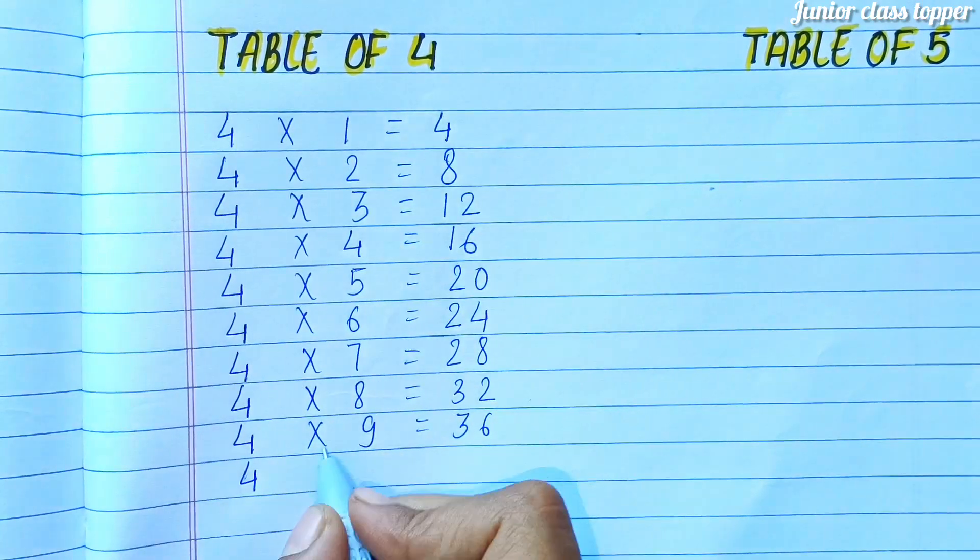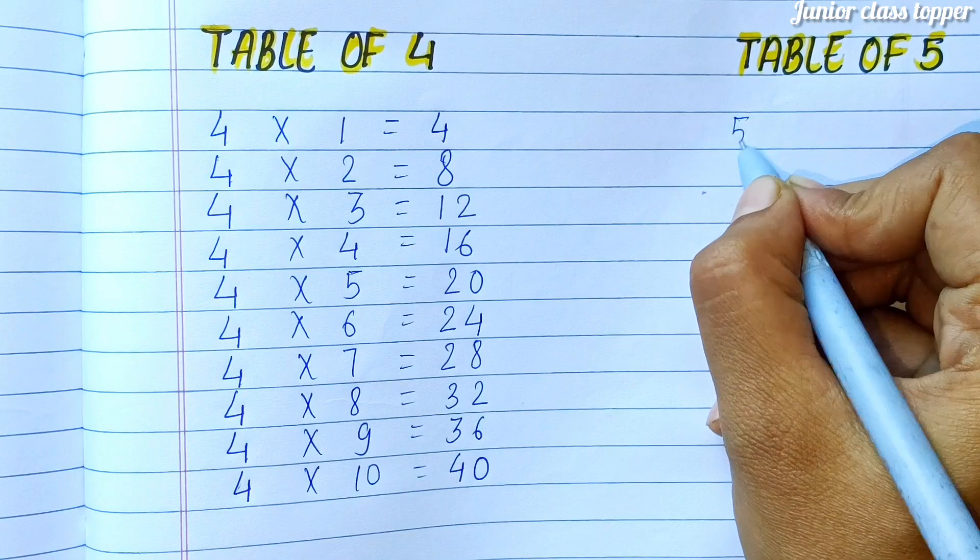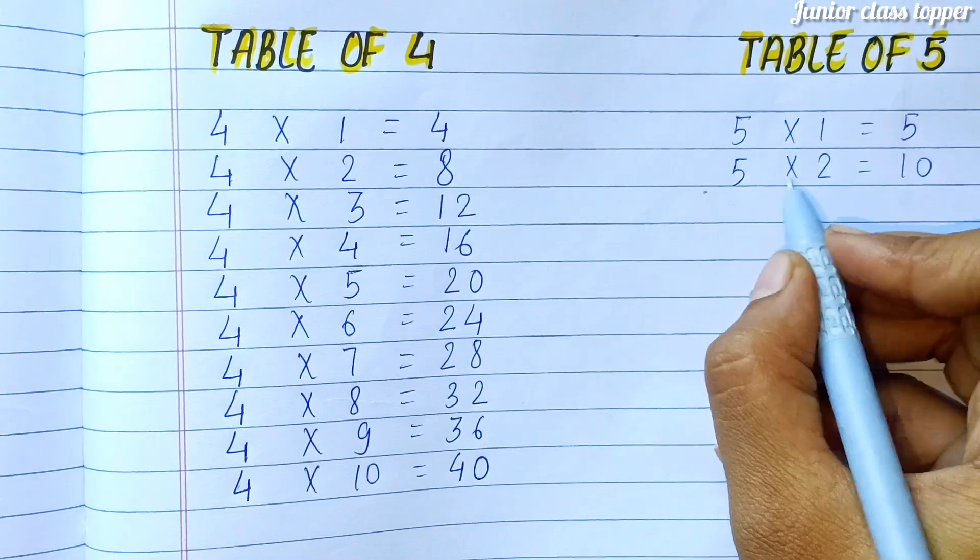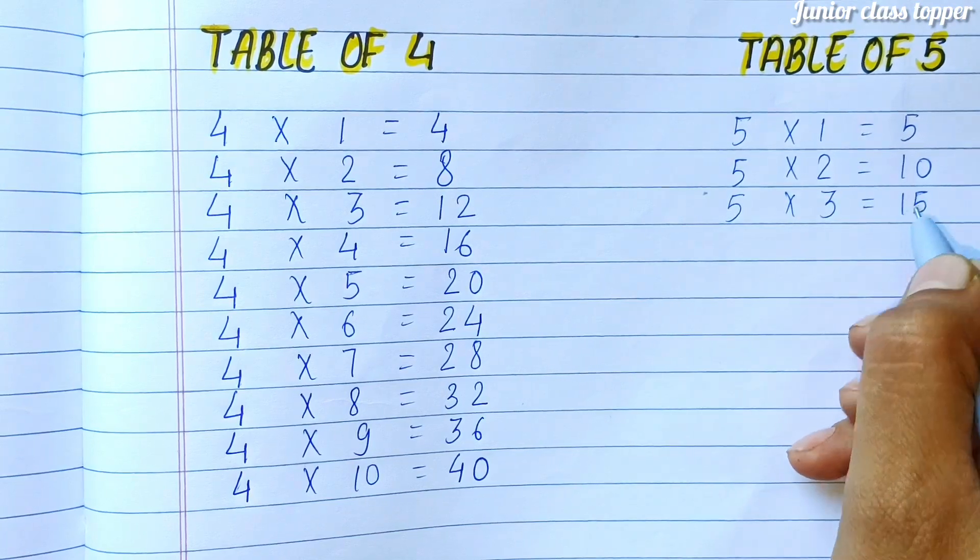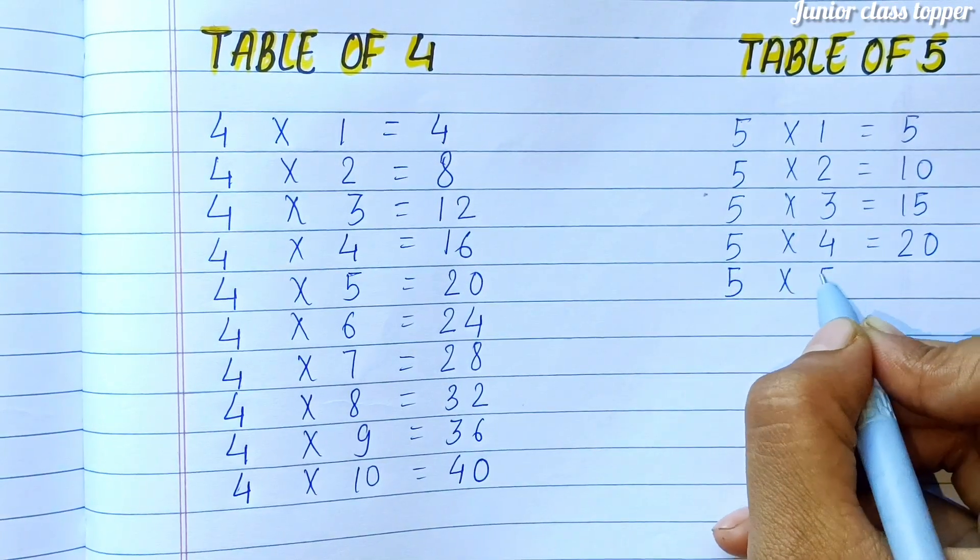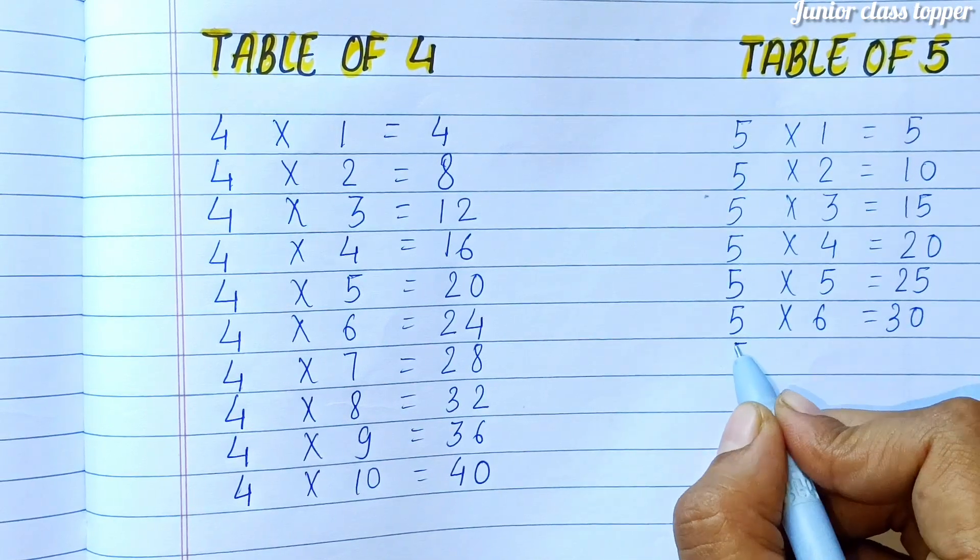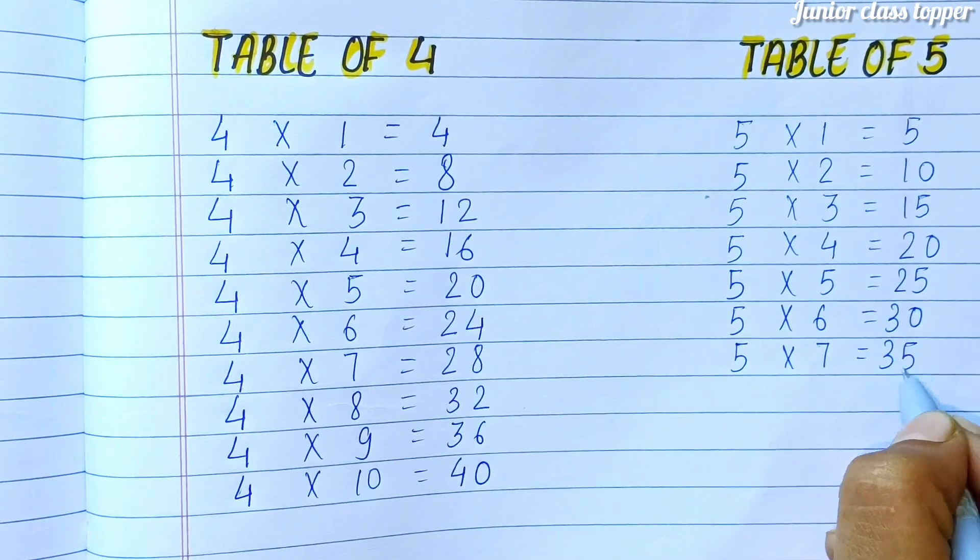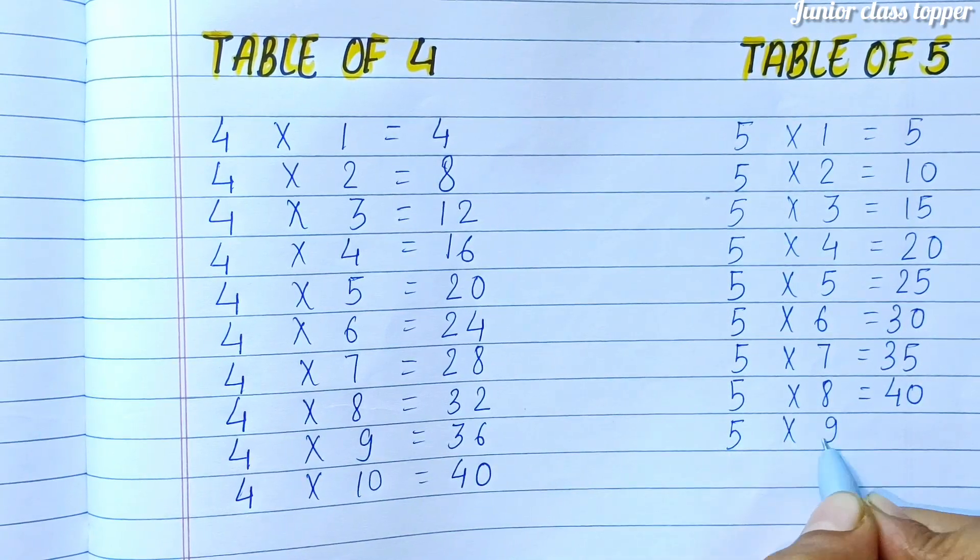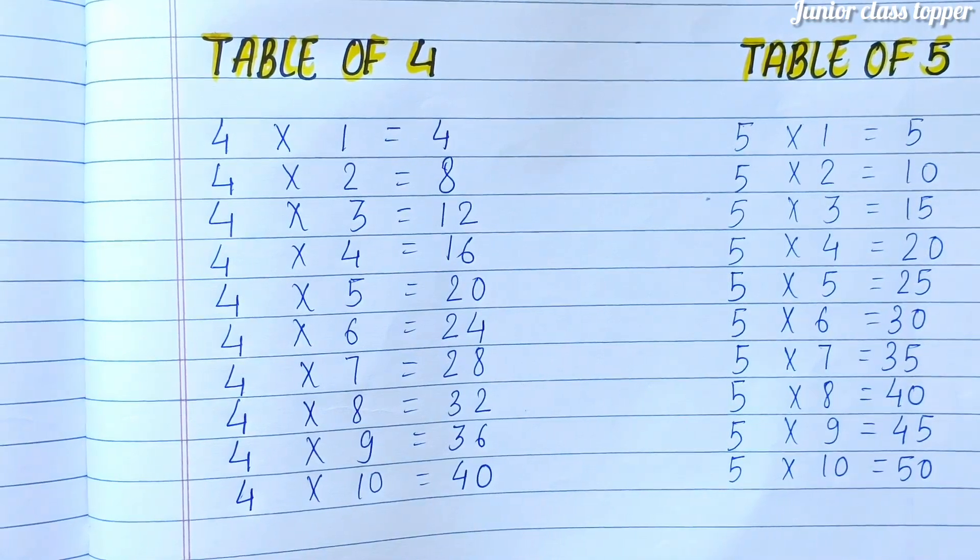Table of Five. Five ones are five. Five twos are ten. Five threes are fifteen. Five fours are twenty. Five fives are twenty-five. Five sixes are thirty. Five sevens are thirty-five. Five eights are forty. Five nines are forty-five. Five tens are fifty.